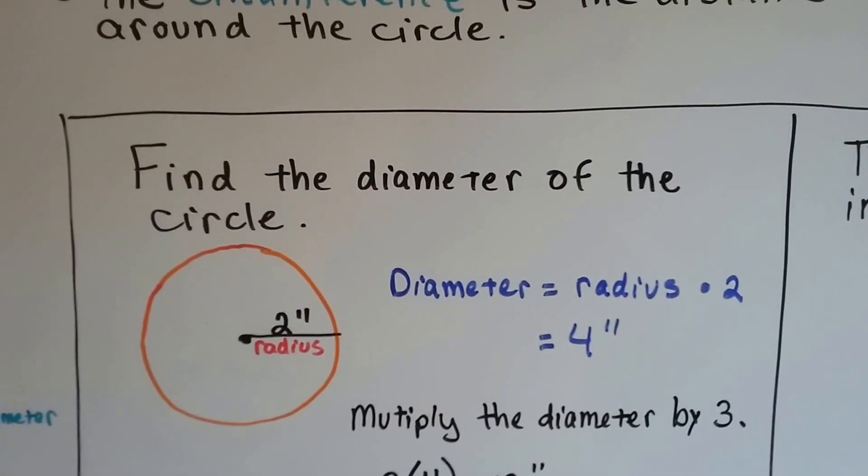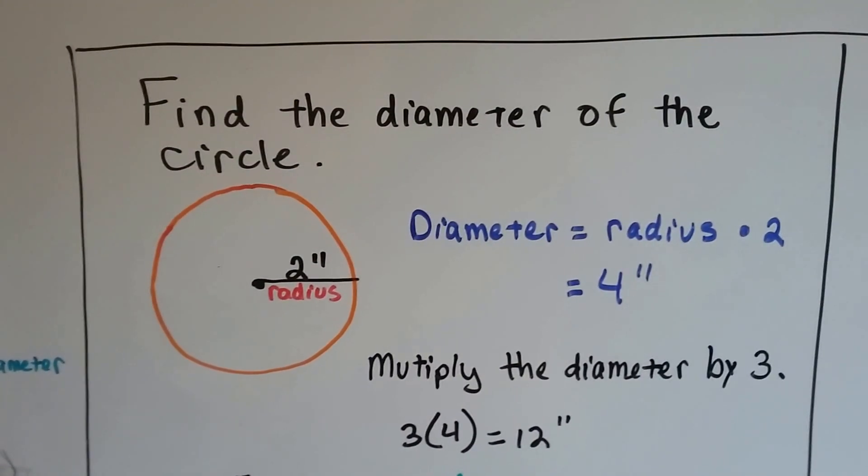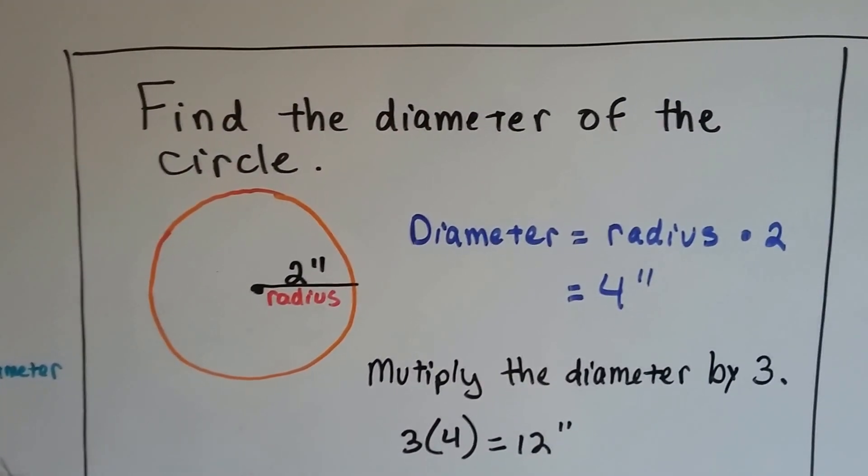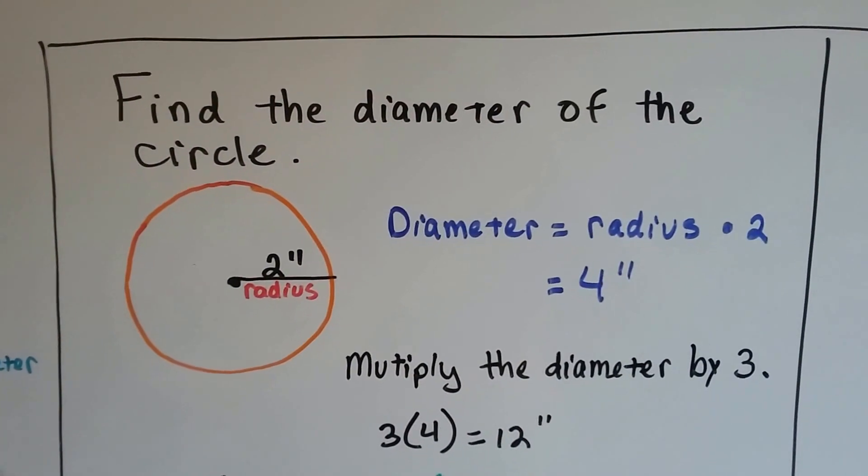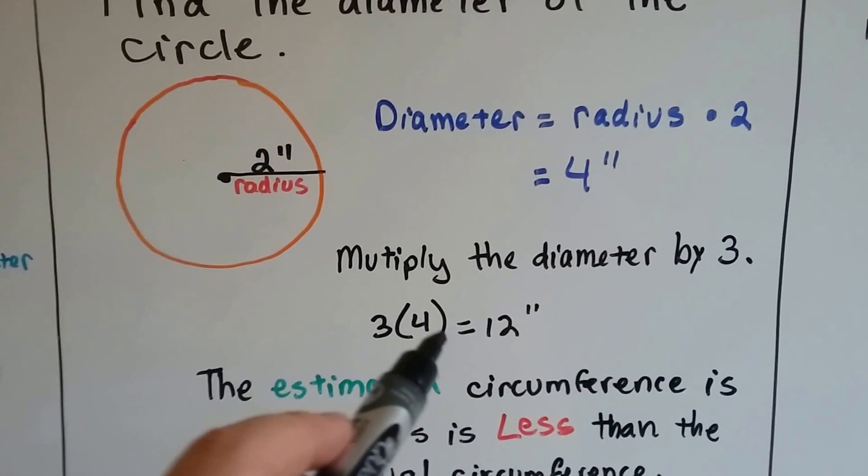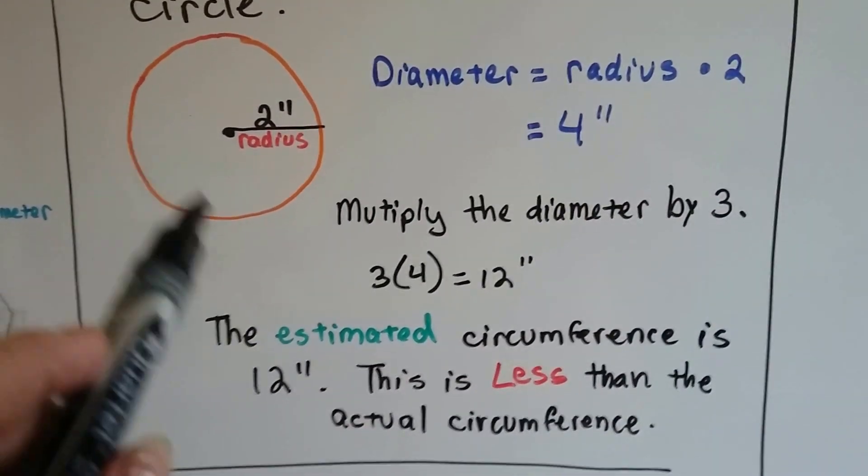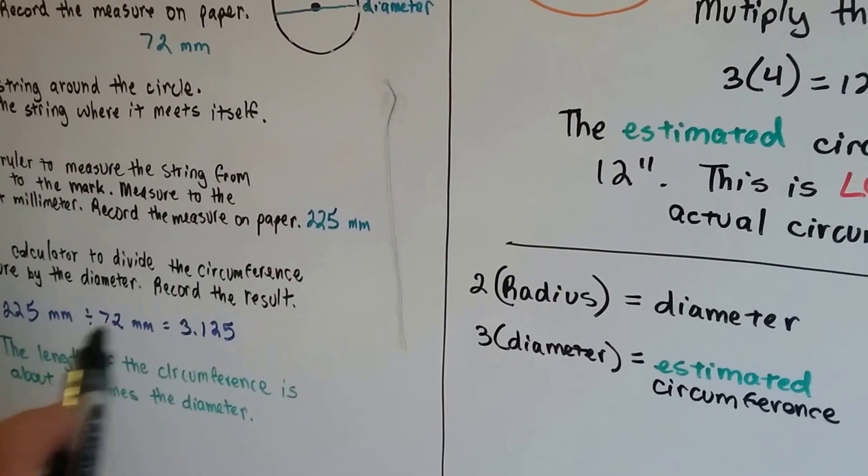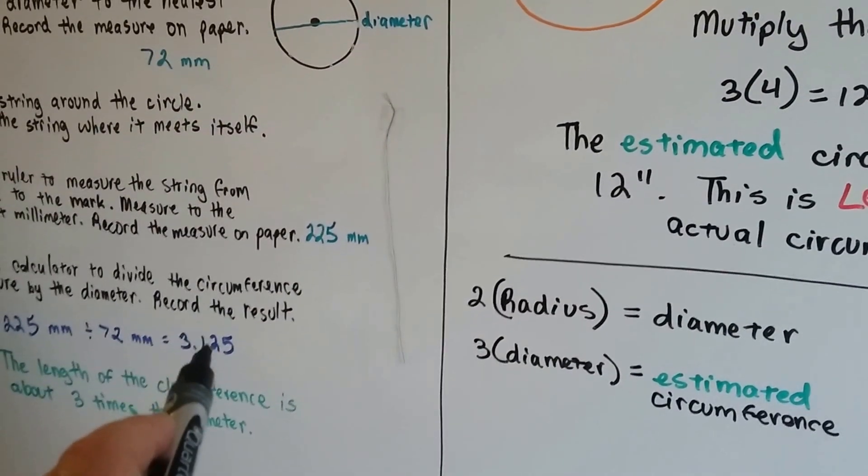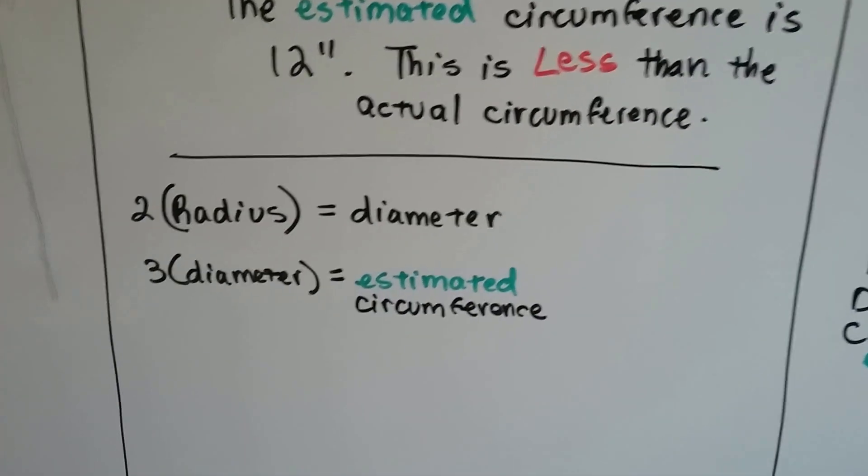So finding the diameter of a circle, we take the measure of the radius, this one's two inches, and we double it to make a diameter measure, which would be four inches. We multiply that by three to get our estimate, and our estimated circumference of this orange circle is 12 inches. Now that's less than the actual circumference because we know from what we did that it's a little bit more than three times around. It's three with a decimal. We're going to talk about that in the next video.